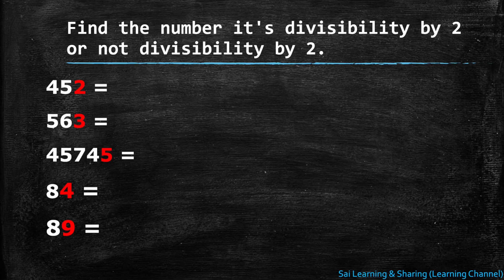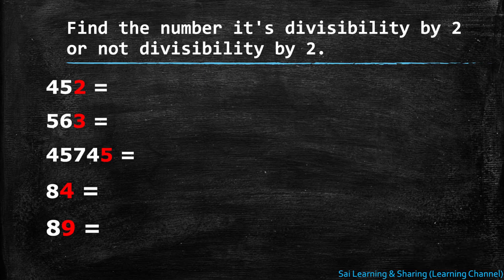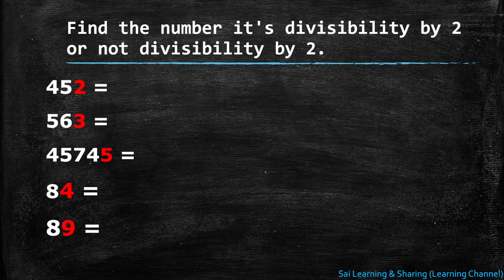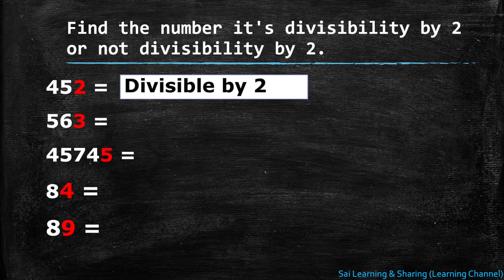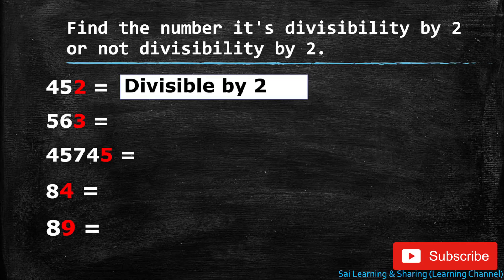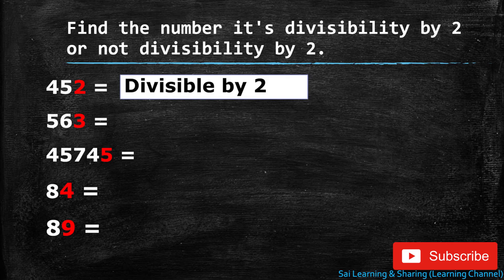452 - in the one's place it is written 2. Hence 2 is an even number, it is divisible by two. The first question is divisible by two. Second one, 563 - in the one's place is written 3. 3 is an odd number, it's not even, so 563 is not divisible by two.